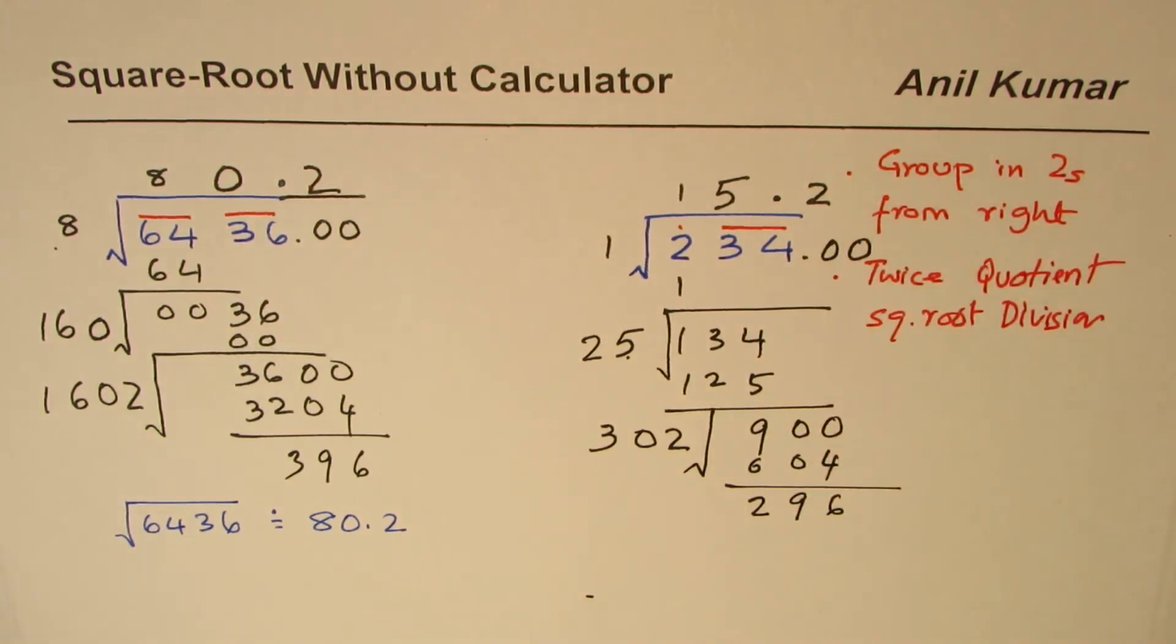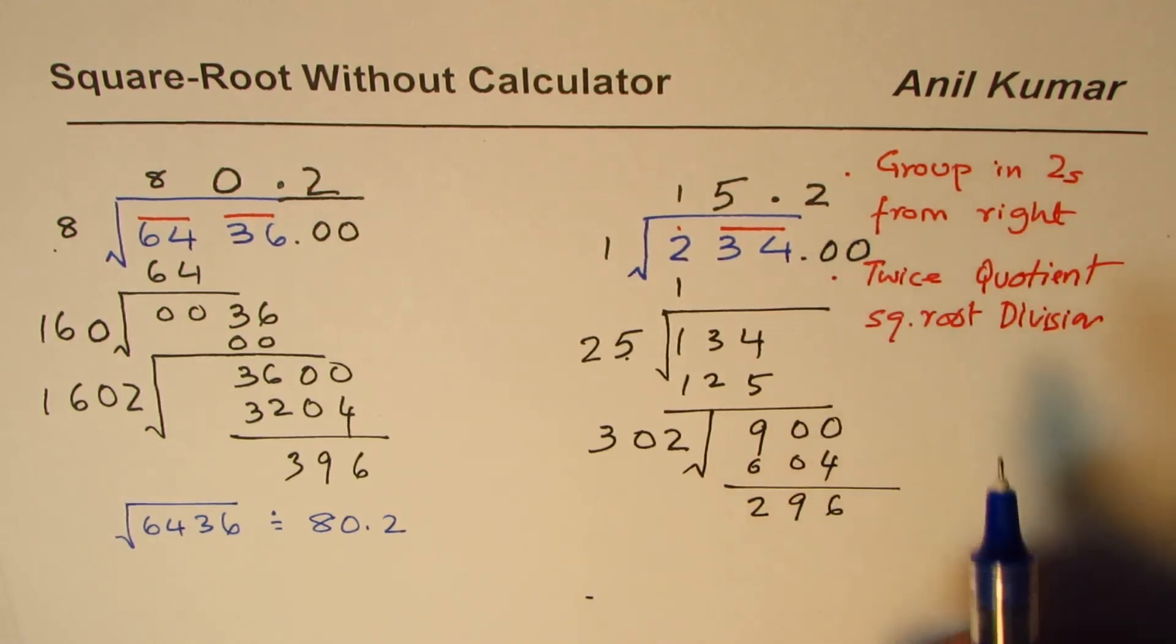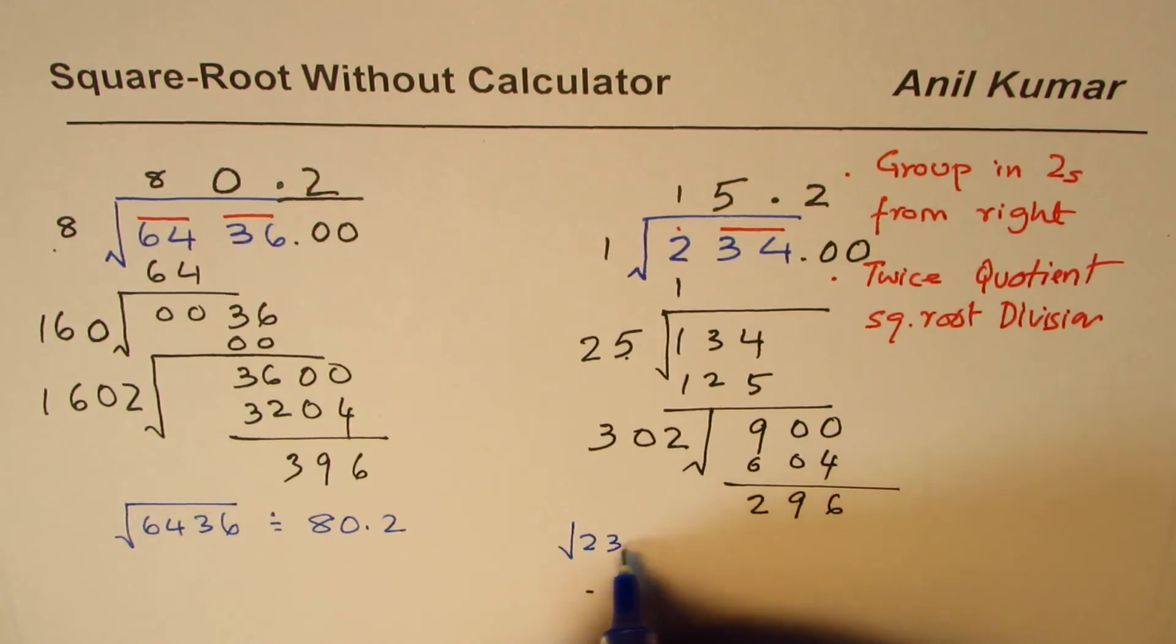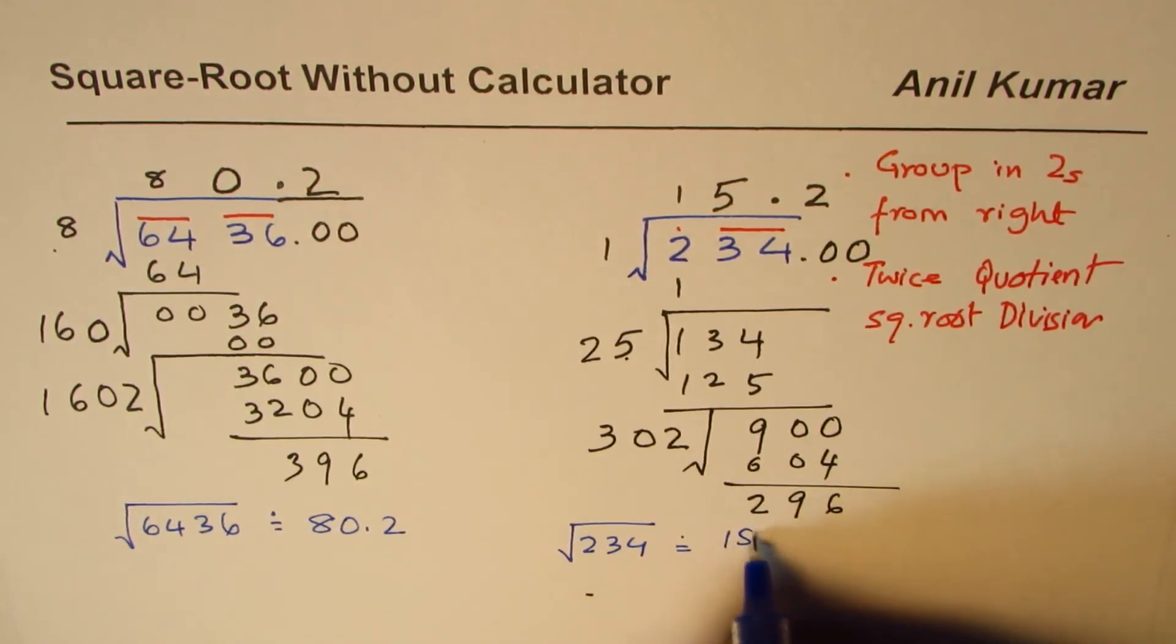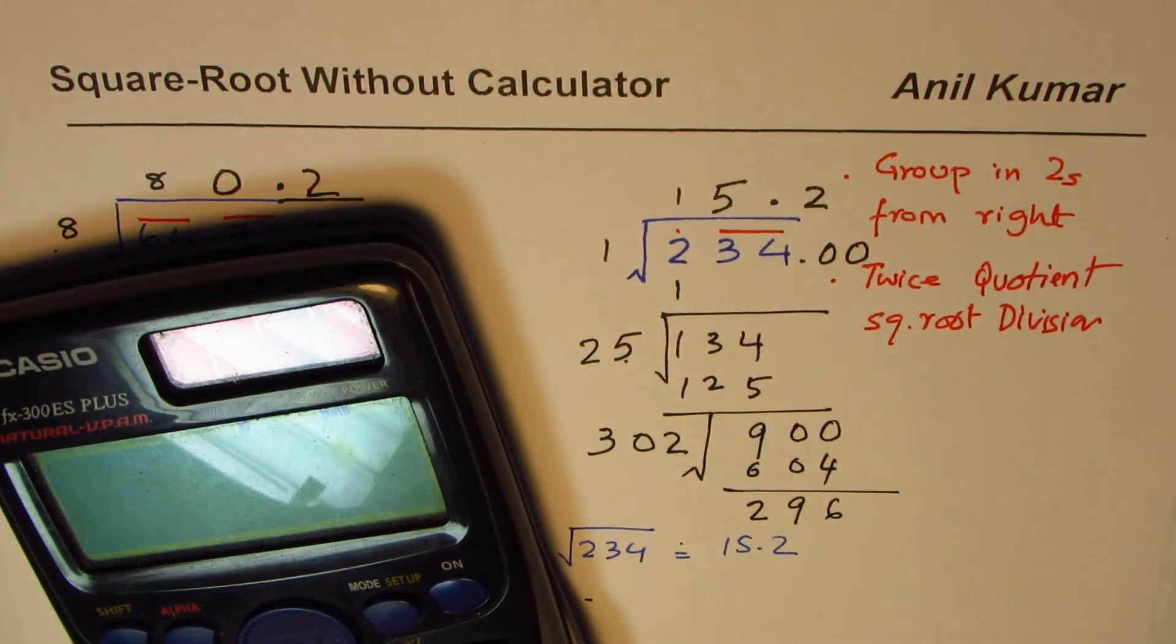Write down the answer which is square root of 234 is equal to approximately 15.2 to one decimal place. Let us check this also.